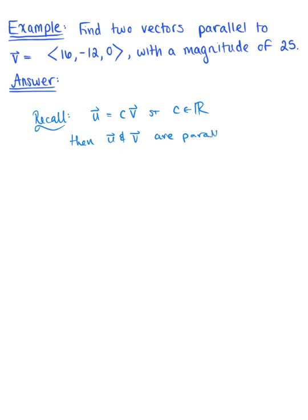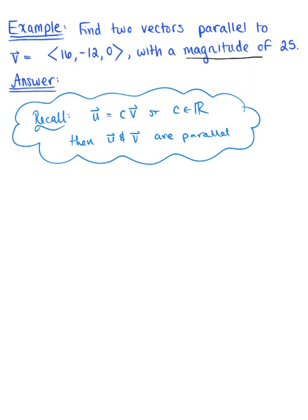So that's our job. We want to find two vectors that are parallel to our given vector v. But now we have this extra condition. These two new parallel vectors must have a magnitude of 25.